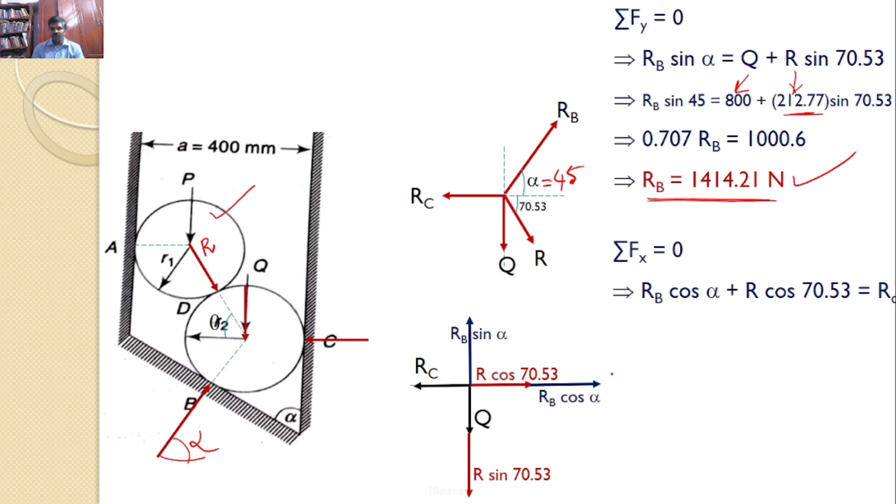Similarly, sigma Fx is equal to 0. So, RB cos alpha plus R cos 70.53 is equal to RC. RB value you calculated here. Alpha value is given as 45. R value also you calculated by considering the free-body diagram of P. So, you can substitute all the values here and you will get RC value as 1070.91 newtons. This is the answer.